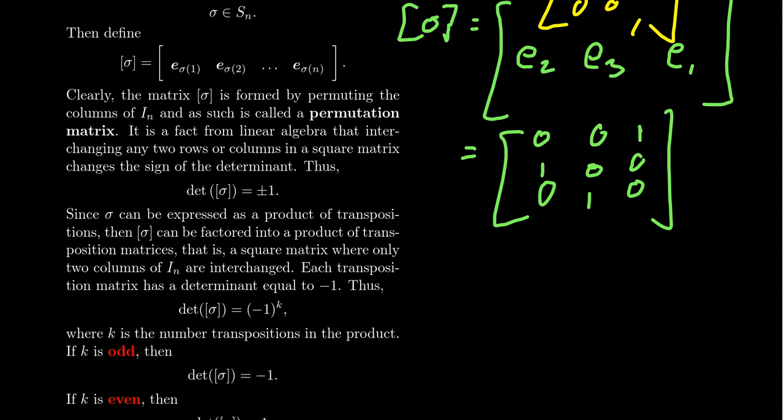It's a fact from linear algebra that interchanging any two columns or rows of a square matrix changes the sign of the determinant. When you learn about determinants, you learn how row operations affect them: the replacement operation doesn't change the determinant, switching two rows or columns changes it by a minus sign, and since the determinant is not affected by matrix transposition, you can also interchange columns.